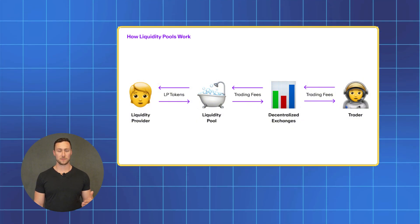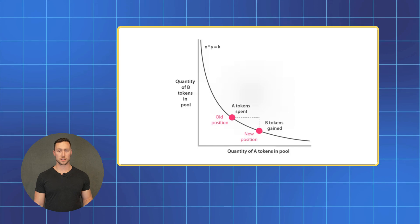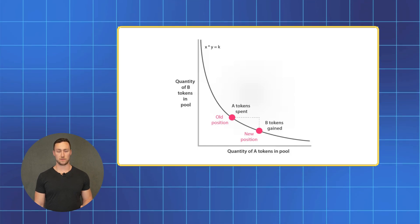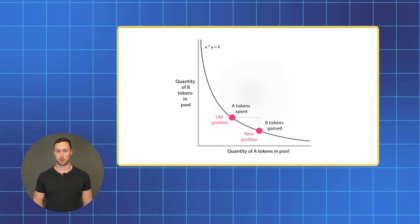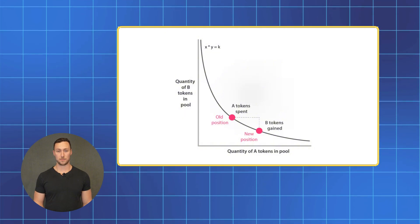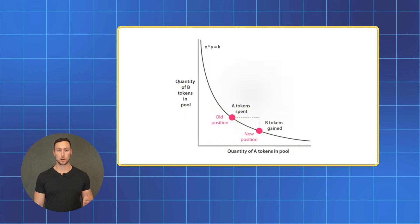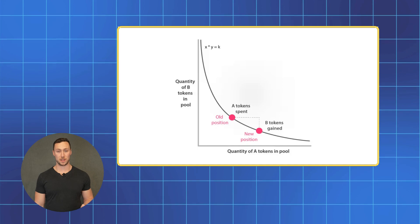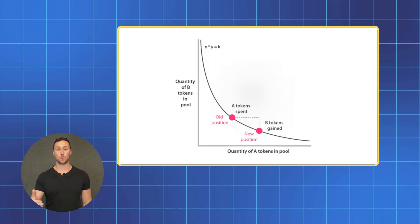The way that these liquidity pools work is that they have two tokens in each pool. The price of a token is determined by the ratio between the number of tokens on each side of the pool. For example, if there are 5,000 of token A and 1,000 of token B in the pool, then token B will cost five token A's. You can trade five token A's to get one token B.